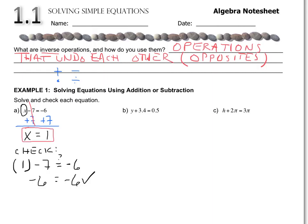Moving on to part B: we're solving for the y value, and everything needs to get away from it. What's next to y is a plus 3.4, so the opposite — the inverse — of adding 3.4 is minus 3.4. I need to do it on both sides, or else it's not an equation anymore. The positive 3.4 and negative 3.4 give me 0, so it cancels.